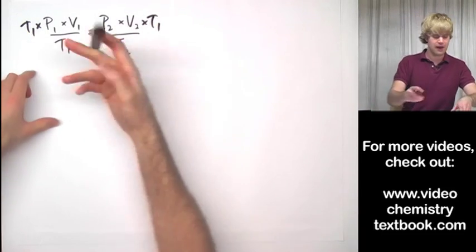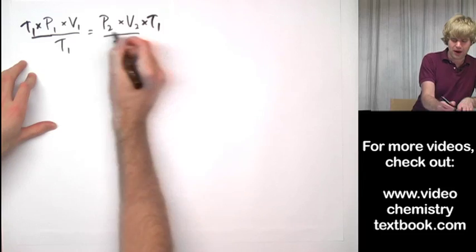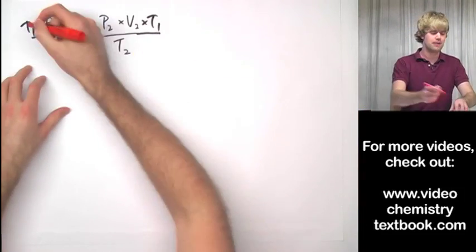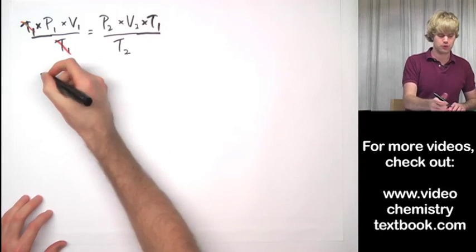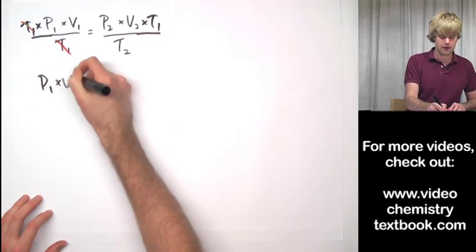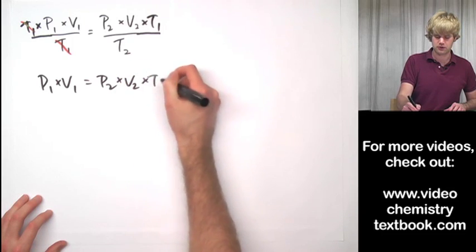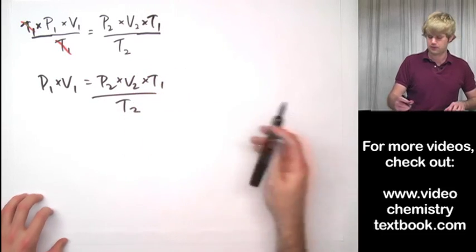So now we have T1, and you can imagine this fraction line goes over here. Now I have T1 on the top and on the bottom. So we get rid of the T1 on this side, and we're left with P1 times V1 equals P2 times V2 times T1 divided by T2.